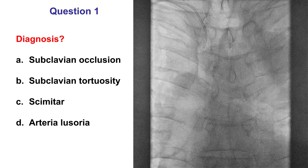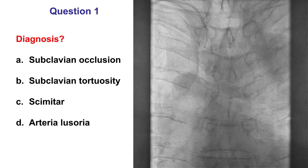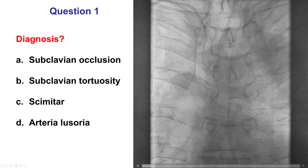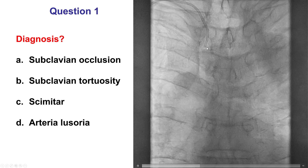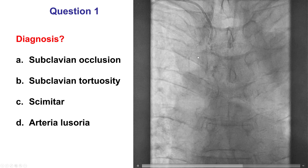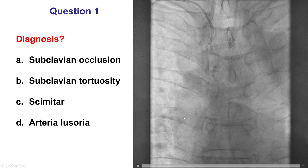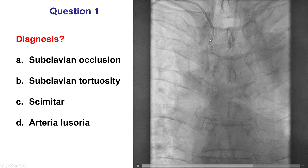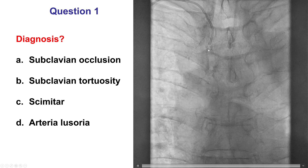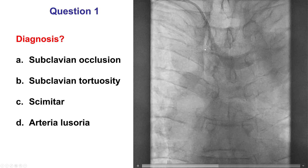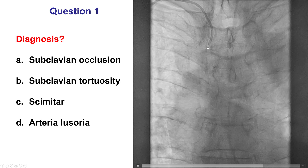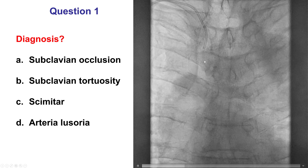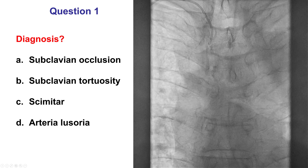This was a patient in whom right radial axis was used; however, there was significant difficulty advancing the guidewire into the ascending aorta. After several attempts, a picture was taken with injection of contrast through the catheter. Based on this image, what is the diagnosis?